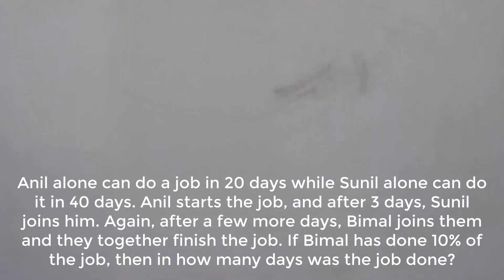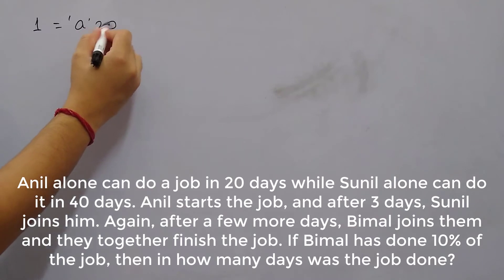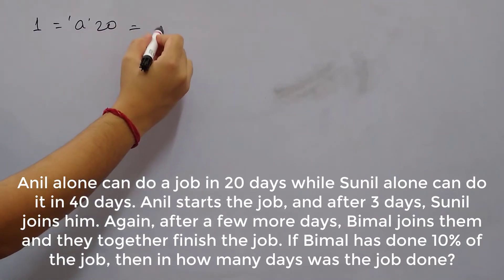Anil alone can do a job in 20 days while Sunil alone can do it in 40 days. So let's say Anil is doing a unit of job per day. So then total unit of job, if it is 1, then 1 equals to a, 20a equals to 40s.